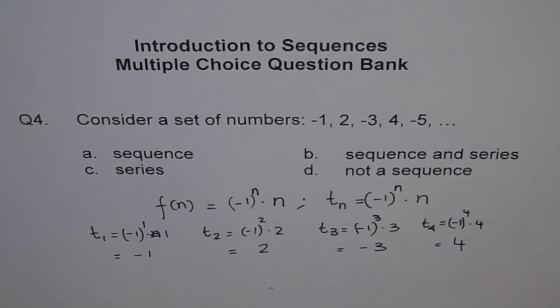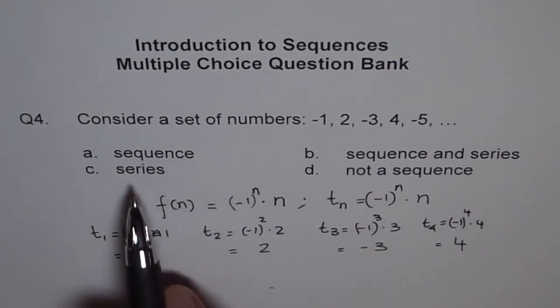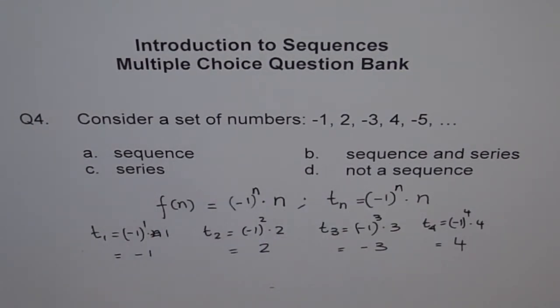Like that, the series will move on. Every odd degree will give us negative, and we will get our set of numbers. So this number set is a sequence. You know it is not a series, because in series we are interested in addition. When we say sum of terms, then we are talking about series; otherwise, just a sequence.